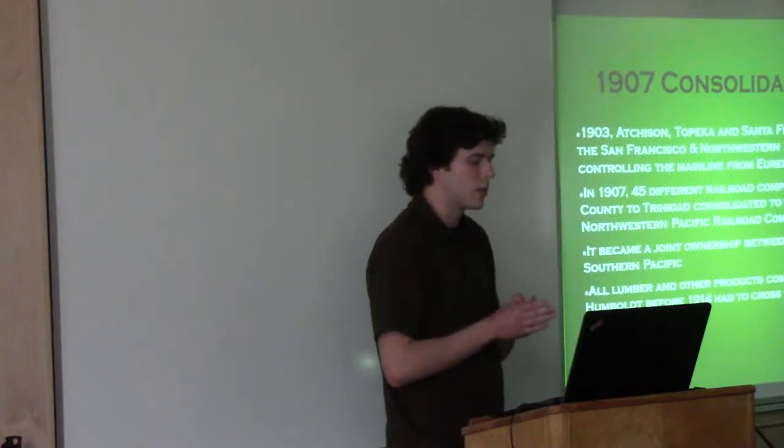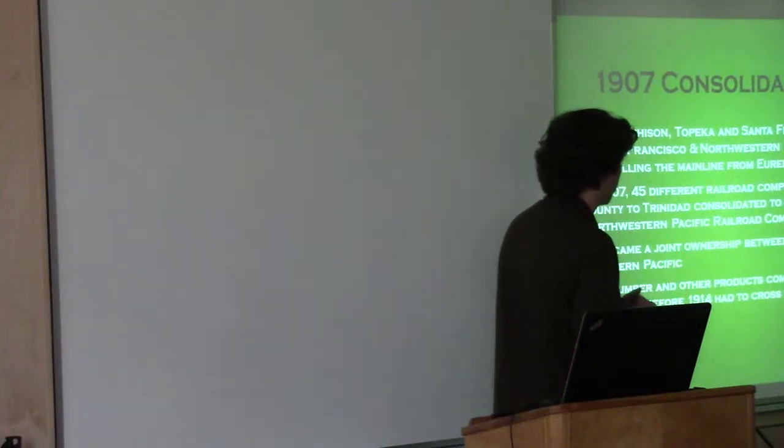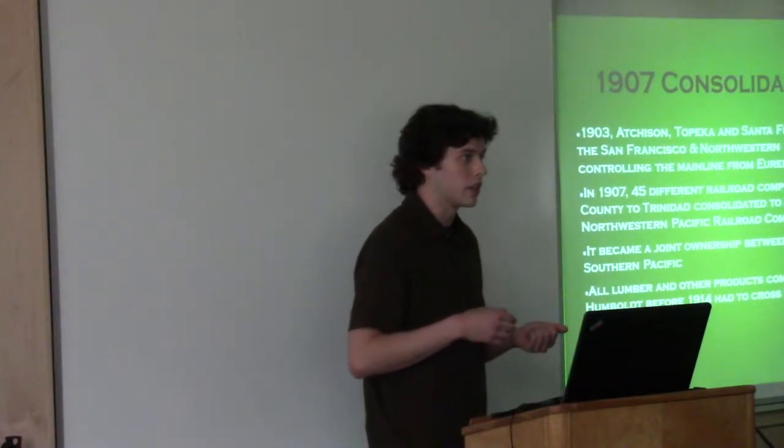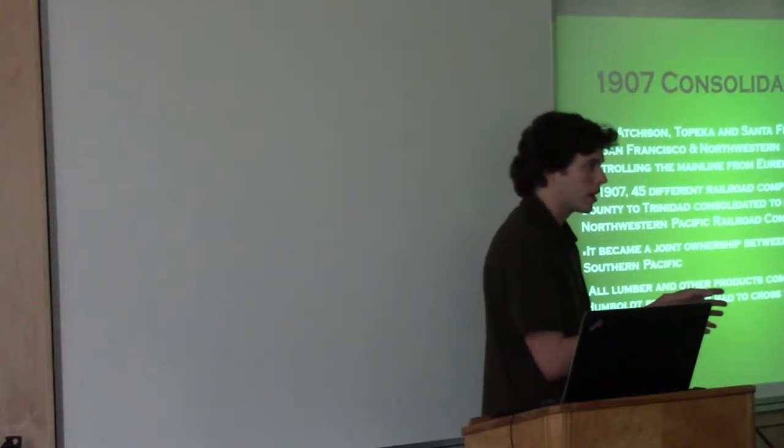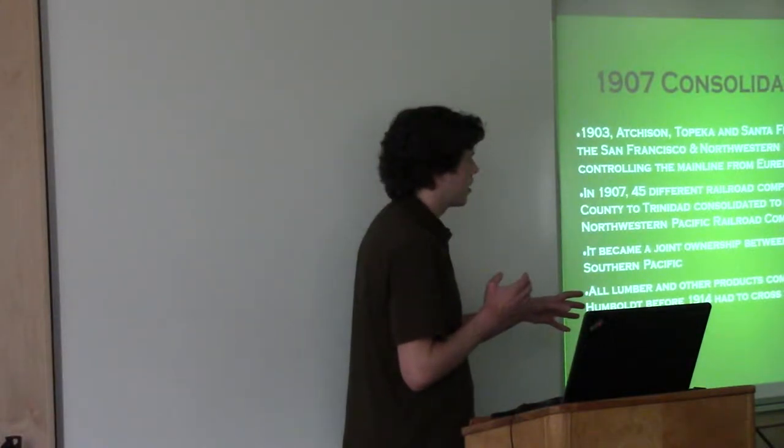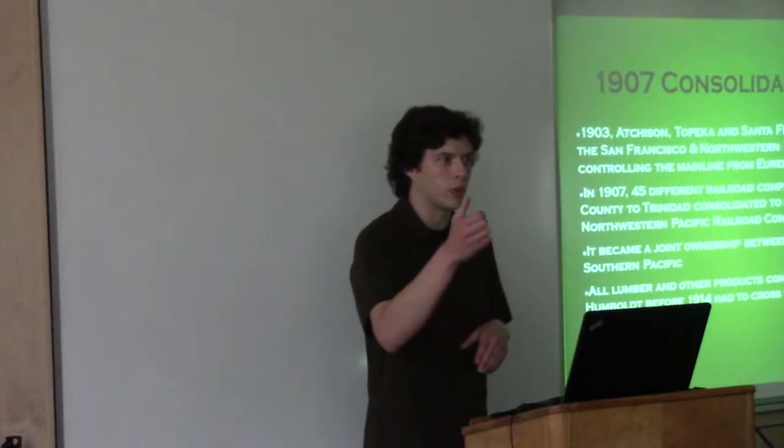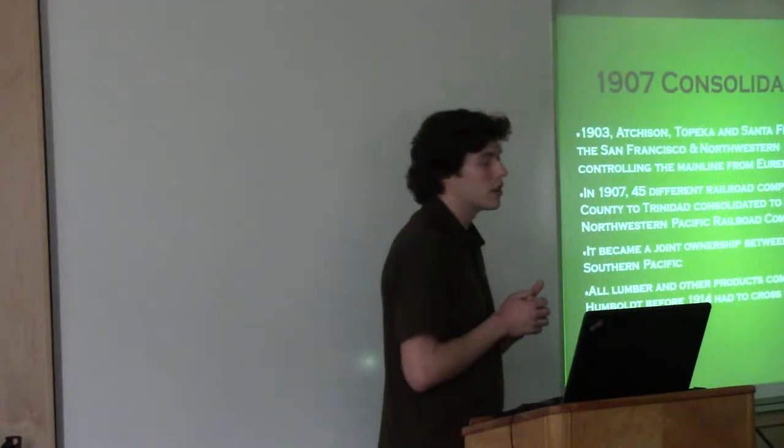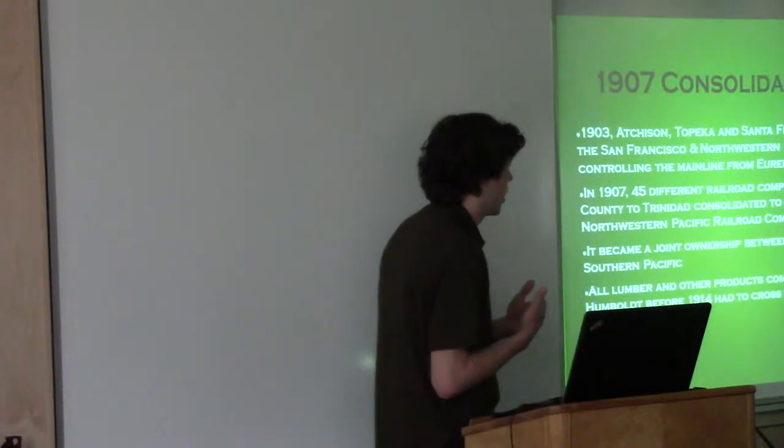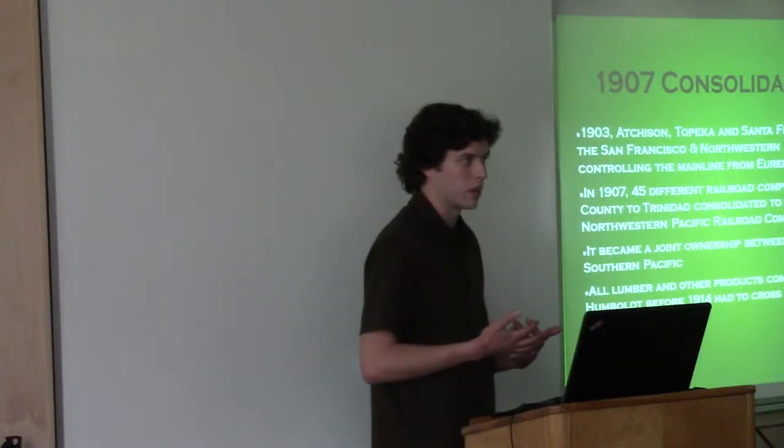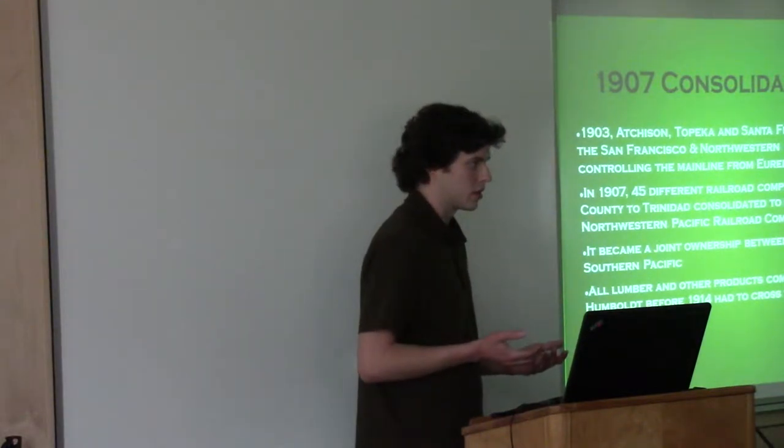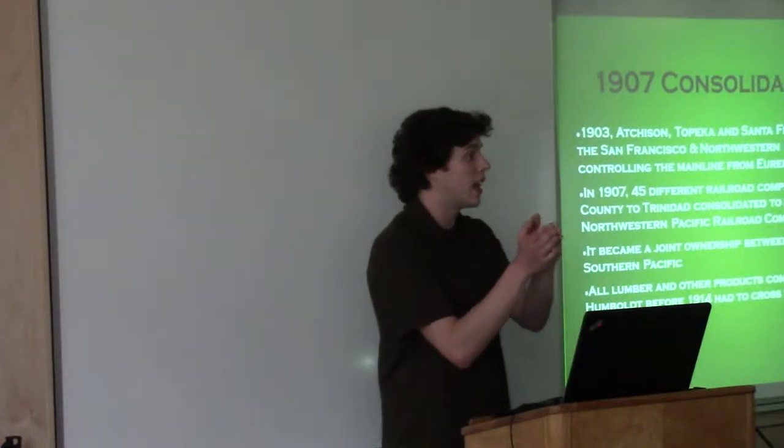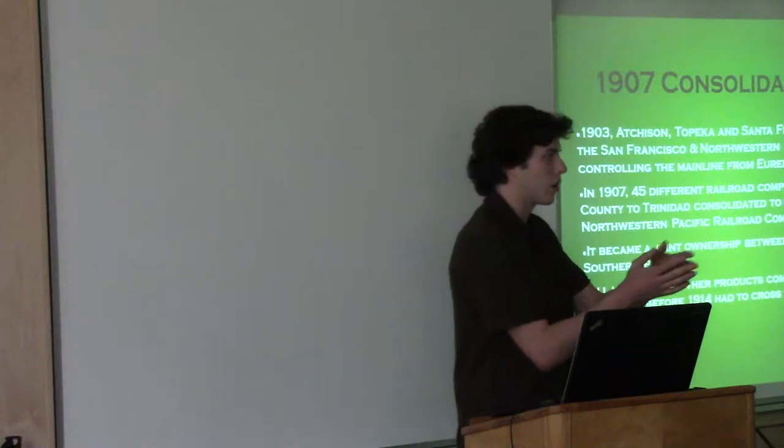So in 1903 the Atchison, Topeka and Santa Fe, known as the ATSF, which was a mainline railroad, created the San Francisco Northwestern Railway. It ends up controlling the mainline from Eureka to Shively. So that ends up being like the first iteration of what would later become NWP. And this is sort of like where we see the initial right-of-way through the canyon to Shively. Pacific Lumber Company built the section that we know it was. So in 1907, 45 different companies actually get consolidated, and it becomes the Northwest and Pacific Railroad Company.